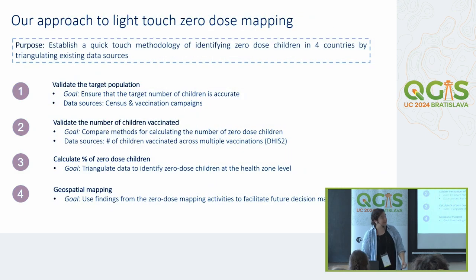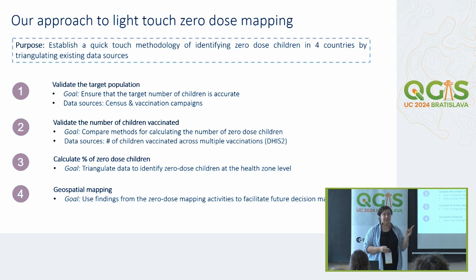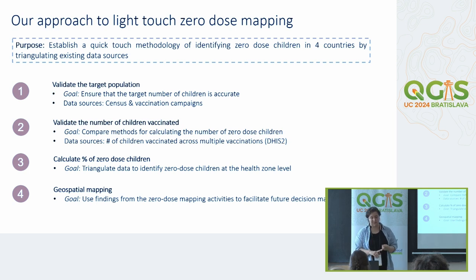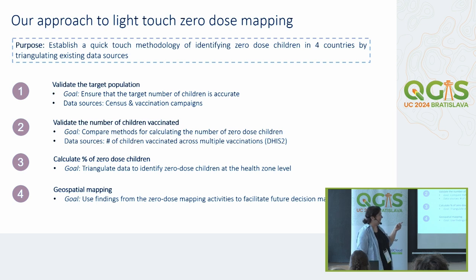The methodology we used had four steps. First, validate the target population—understand the true number of children in the areas. Second, validate the number of children who had actually been vaccinated. Third, calculate the percentage of zero-dose children. And fourth, do the geospatial mapping.